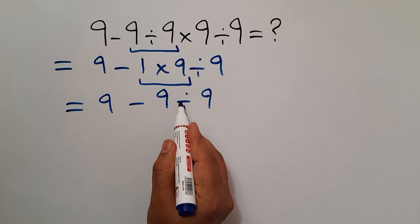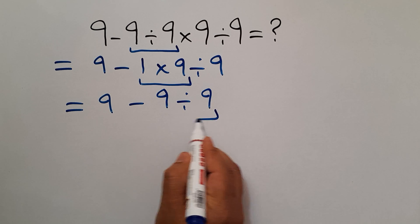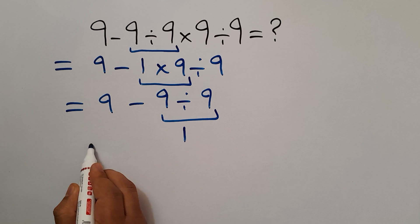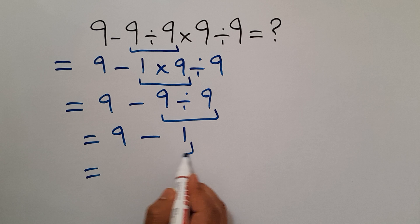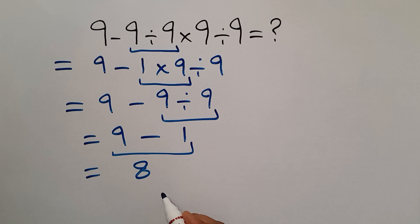Next, 9 divided by 9, which equals 1. So, we have 9 minus 1, and this is equal to 8. So, our final answer to this problem is just 8.